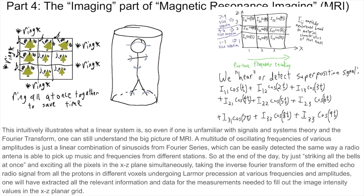This intuitively illustrates what a linear system is. So even if one is unfamiliar with signals and systems theory and the Fourier transform, one can still understand the big picture of MRI. A multitude of oscillating frequencies of various amplitudes is just a linear combination of sinusoids from Fourier series, which can be easily detected the same way a radio antenna is able to pick up music and frequencies from different stations. So at the end of the day, by exciting all the pixels in the XZ plane simultaneously together and taking the inverse Fourier transform of the emitted echo radio signal from all the protons in different voxels undergoing Larmor precession at various frequencies and amplitudes, one will have extracted all the relevant information and data to fill out the image intensity values in the XZ planar grid.